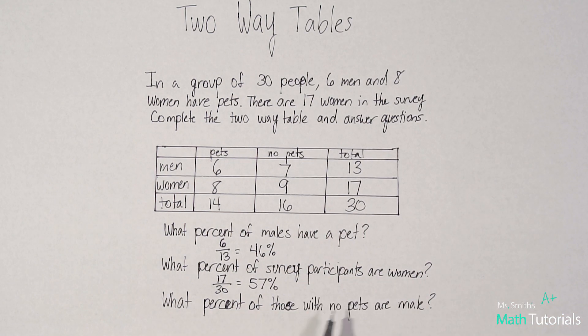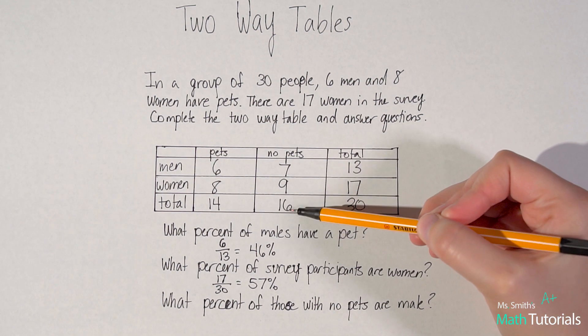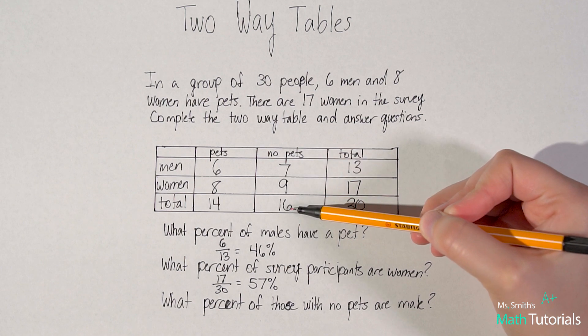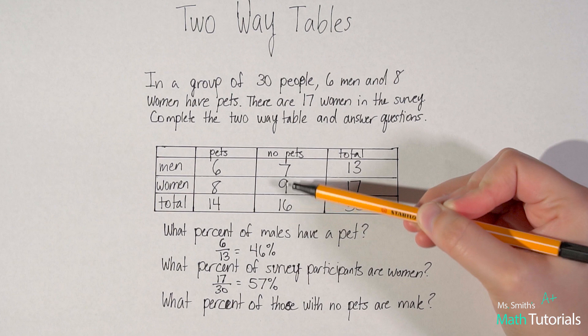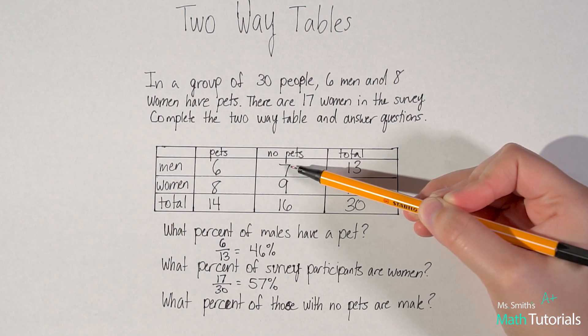All right. And then my last question, what percent of those with no pets are male? So they're talking about the total number of people without pets. Okay. So there's 16 people with no pets. How many of them are male? What percent of them are male?